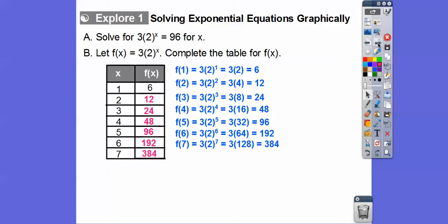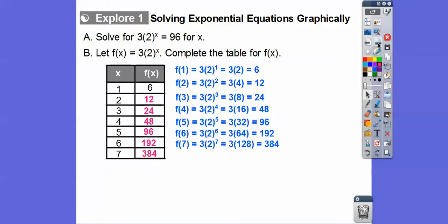All right, so it's going to ask us now to go ahead and graph. So we're going to use that table of values and graph all these f points. We'll graph 1, 6, 2, 12, 3, 24, and we'll go all the way up to 5, 96. Because otherwise, this 384 would take us off the page, and our graph would be really small. It would be hard to tell.